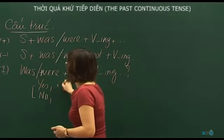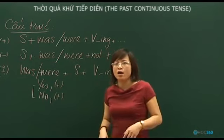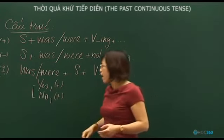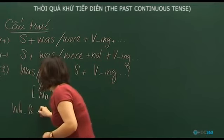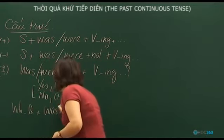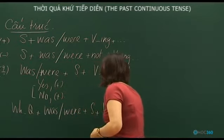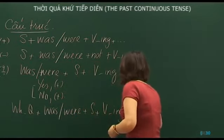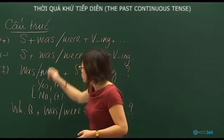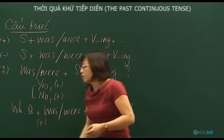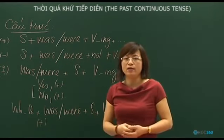For wh-questions, we place the question word at the front, followed by 'was' or 'were', then the subject and verb-ing. We use an affirmative structure to provide information depending on the question word.